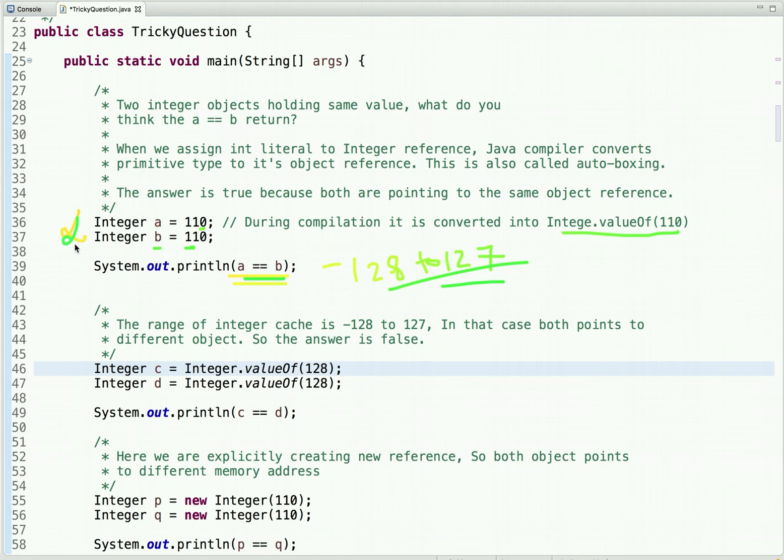Now it is clear. So let's move to the second statement, which is here we are checking c and then we are doing integer dot valueOf which is similar to this because it it's for us, we are here simply writing 110. But during compilation, Java compiler converts them into integer dot valueOf, and here we are explicitly writing integer dot valueOf, and similarly for c and d, we are checking whether c and d points to the same memory address.